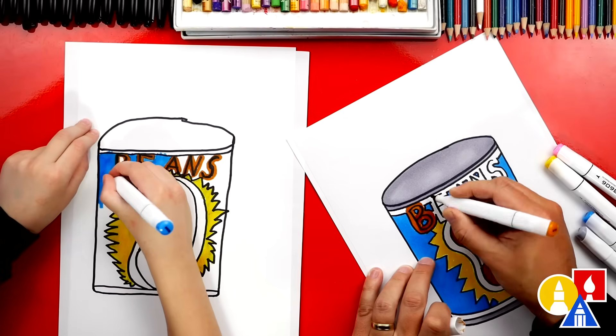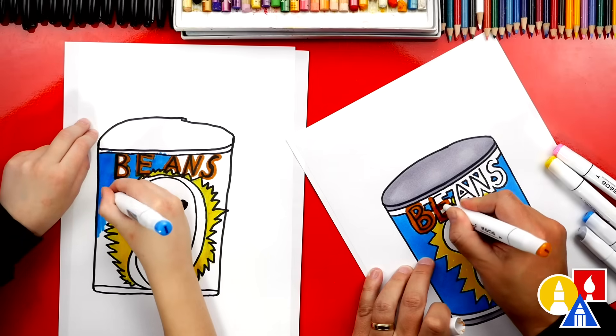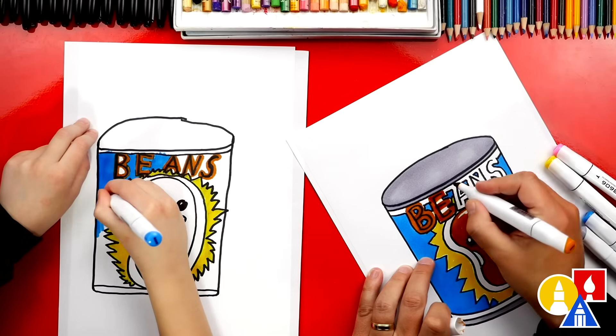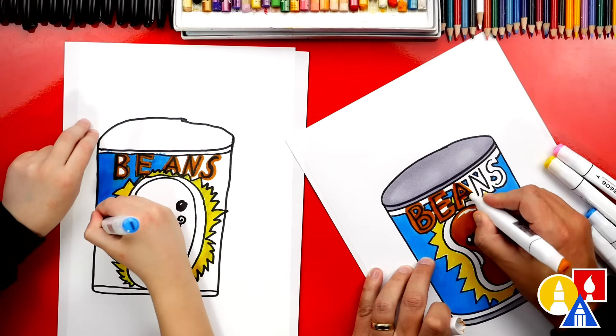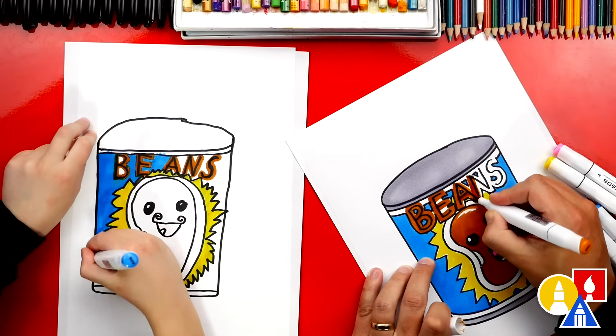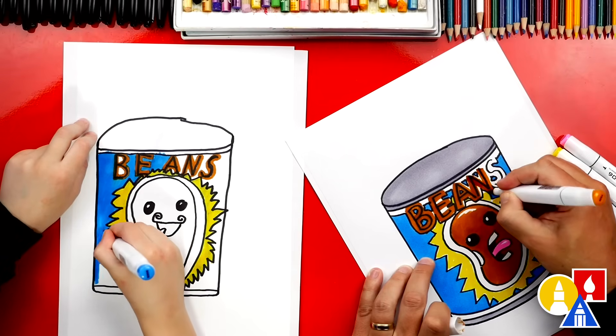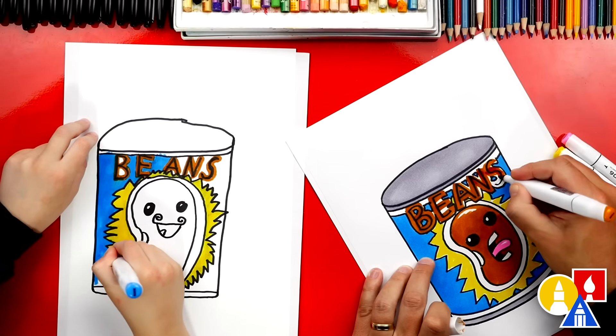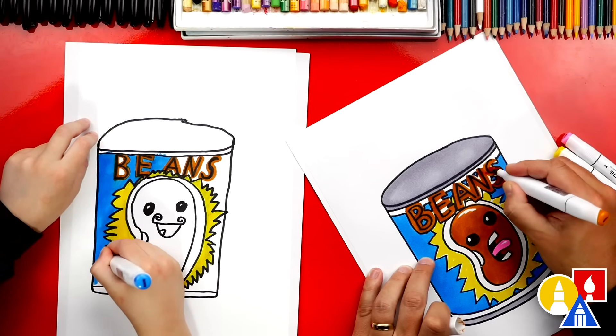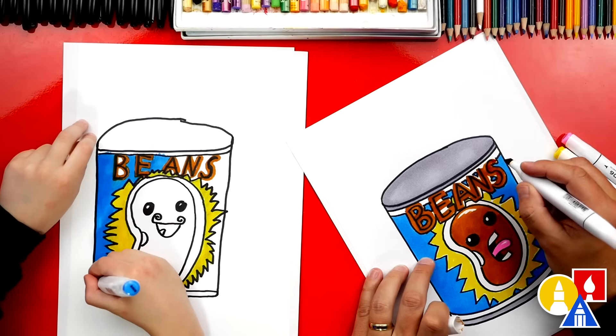So I'm going to color around just like you because I thought that looked really cool. I outlined my letters too, but I don't have to outline them. You could design your can of beans any way you want. Well, this looks really cool. You could also, there's all different kinds of beans too. There's brown beans or pinto beans. There's black beans. There's white beans. Brown beans. Yeah. Brown beans. That's what we're coloring.